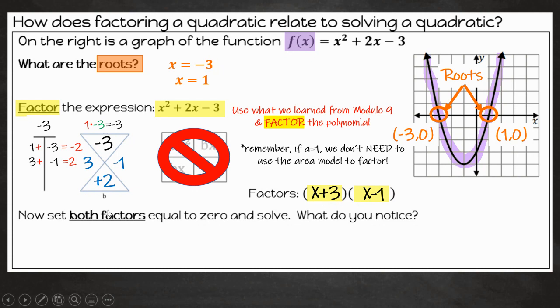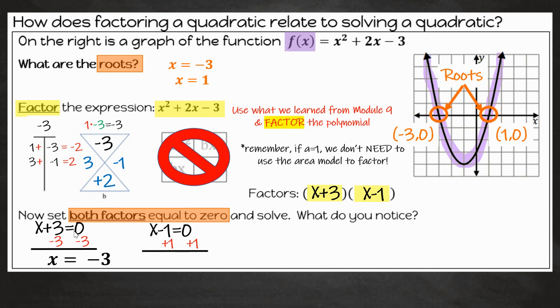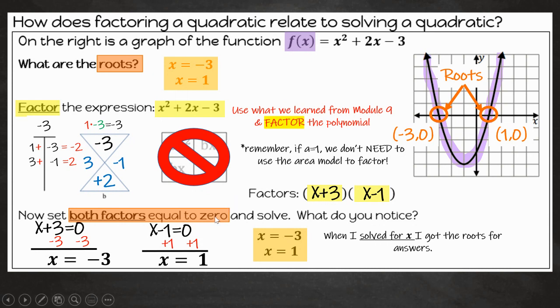So now that we have our factors, now what you have to do is you're going to set both factors equal to zero and solve for x. So if I set x plus 3 equal to zero, I subtract 3 from both sides. x equals negative 3. If I set x minus 1 equal to zero and I add 1 to both sides, x equals 1. So I found my zeros to be x equals negative 3 and x equals 1. My roots and my zeros are the same thing. What that means or what I notice is that when I solve for x, I get the roots for my answers. So starting tomorrow, we're going to start factoring polynomials like we did in module 9, but now we're going to take it a step further and actually set them equal to zero and solve for x.